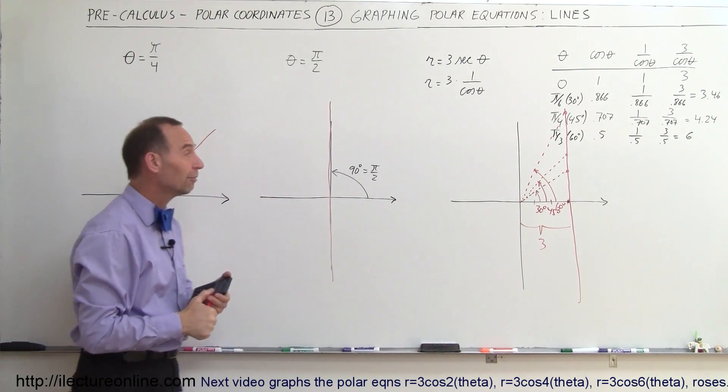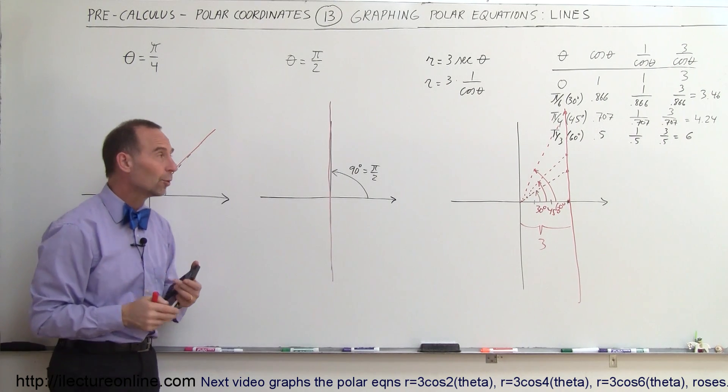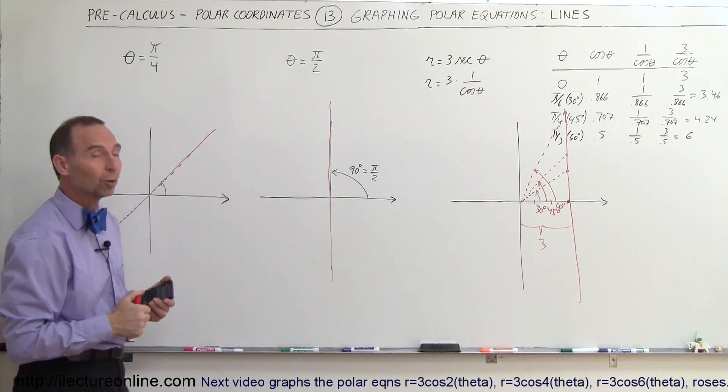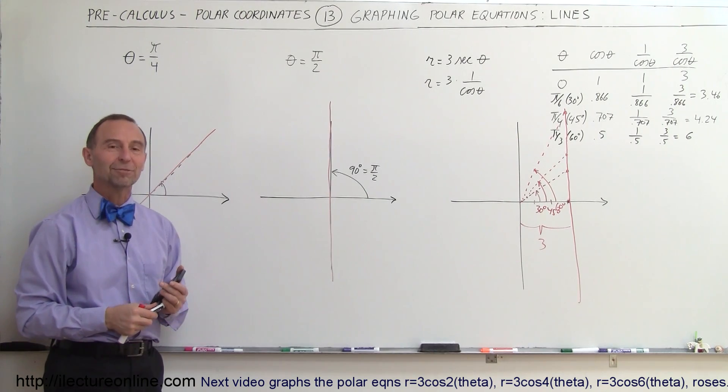And so you can see that you can still get straight lines using trigonometric functions like that, set away from the x-axis or the y-axis. There's lots of different ways in which you can get straight line equations in polar coordinates, and that's how we figure out how to graph them.